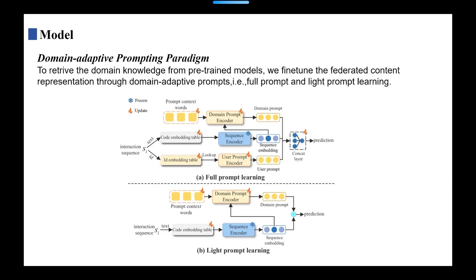At last, to retrieve the domain knowledge from pre-trained models, we fine-tune the federated content representation through domain-adaptive prompts. We have two prompting paradigms: full-prompt and light-prompt.